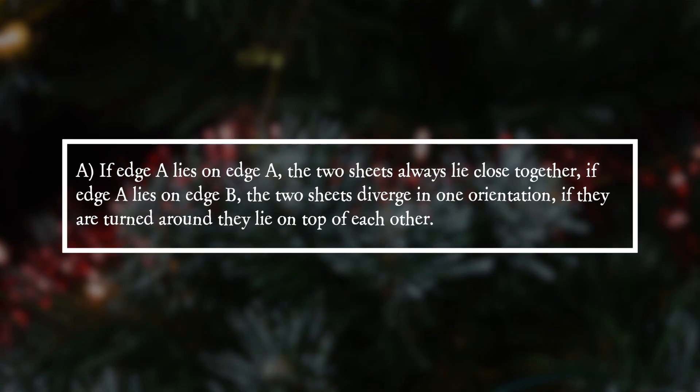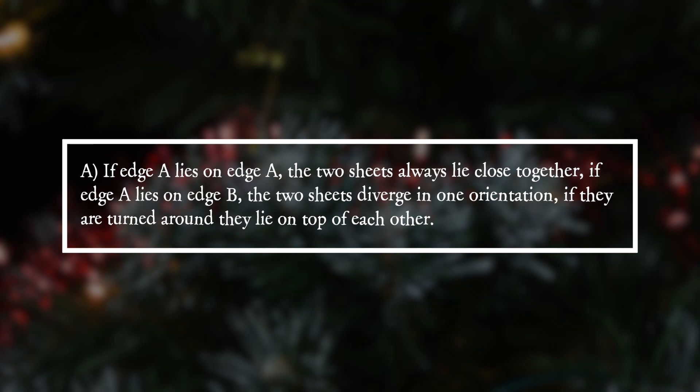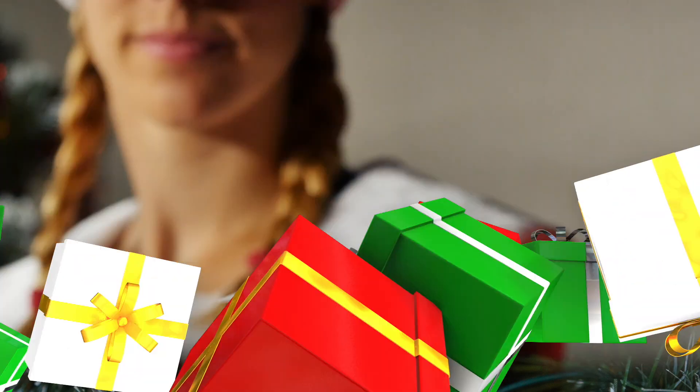It is answer A. If edge A lies on edge A, the two sheets always lie close together. If edge A lies on edge B, the two sheets run apart in one orientation. Outside down, they lay on top of each other.